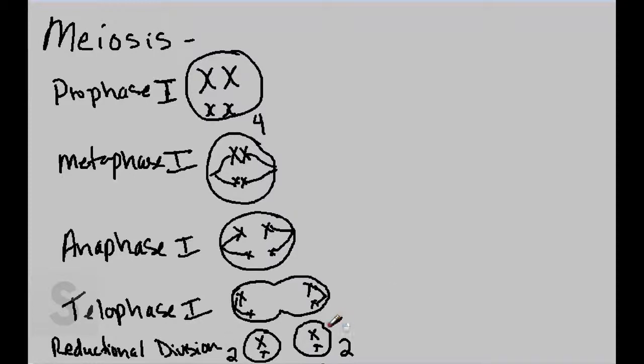Then each of these daughter cells is going to undergo a second round of meiosis, known as meiosis II. The first part is known as meiosis I, and the second one is meiosis II.